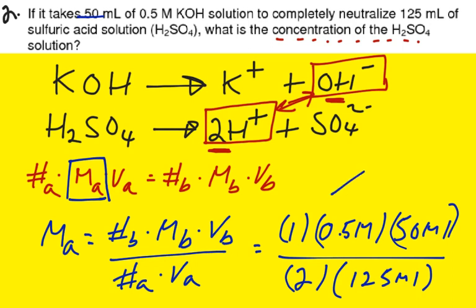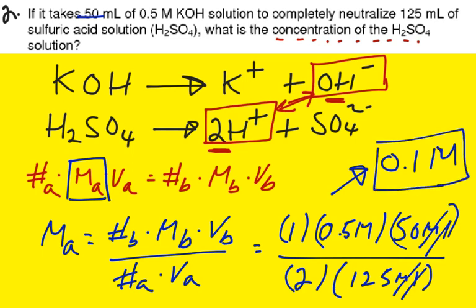So we have 25 divided by 250 equals to 0.1. There we go. Good. So the answer is 0.1 big M. As we noticed as before, our mLs, milliliters, they cancel out. We have 0.1 big M as our final answer, our concentration of the acid H2SO4.